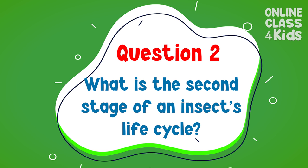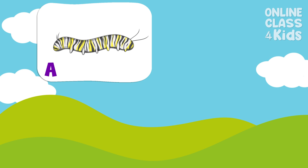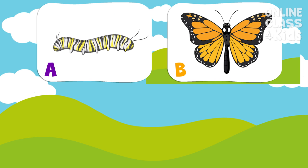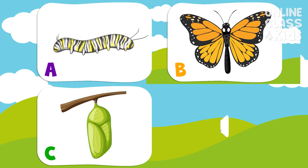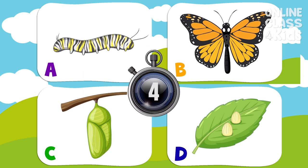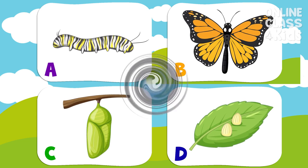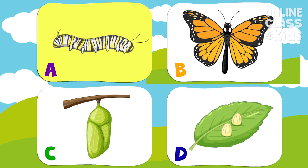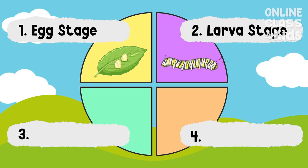What is the second stage of an insect's life cycle? Is it A, B, C, or D? Letter A. The second stage of an insect's life cycle is the larva stage. Very good!